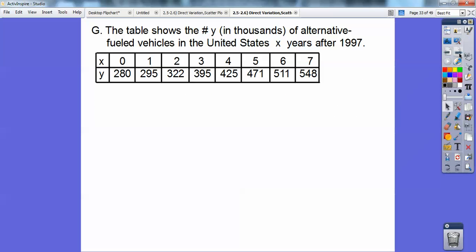So the table shows the number Y that's in thousands of alternative fuel vehicles in the United States in X years after 1997. So this is zero years after 1997. So this would be 1997. One year after that, this would be 1998. Two years after that, this would be 1999 and so on. 1999, this would be 2000, 2001, 2002, 2003, 2004 right there.